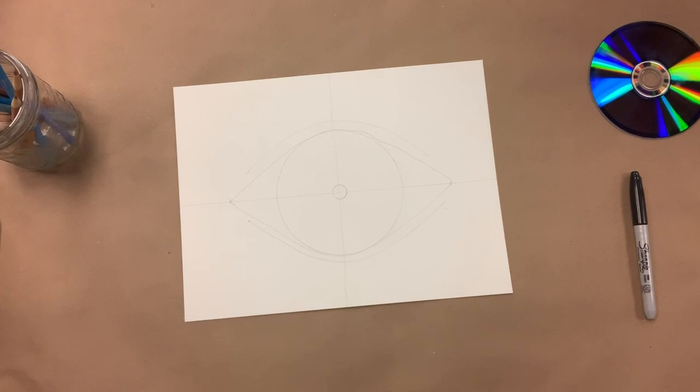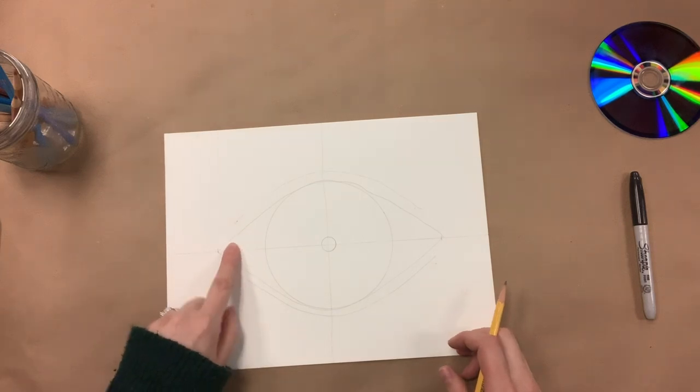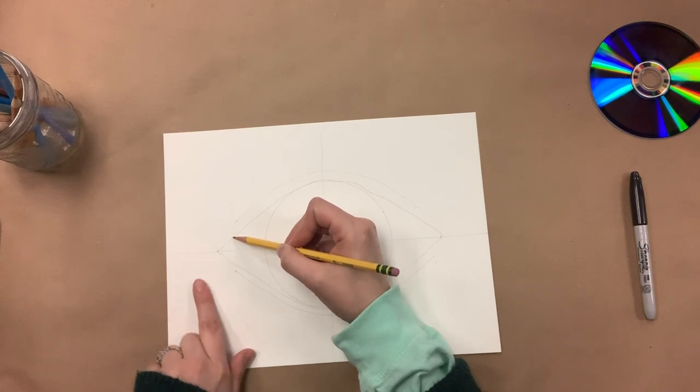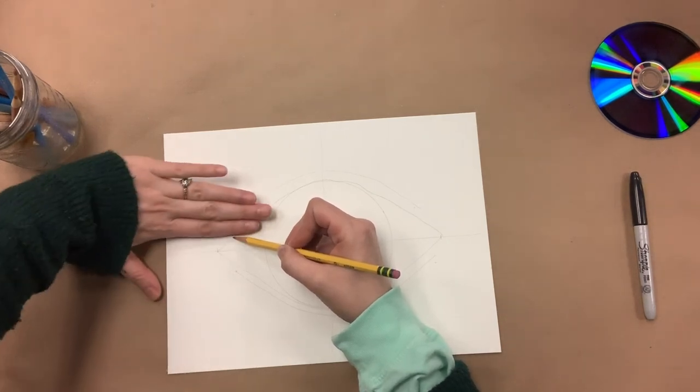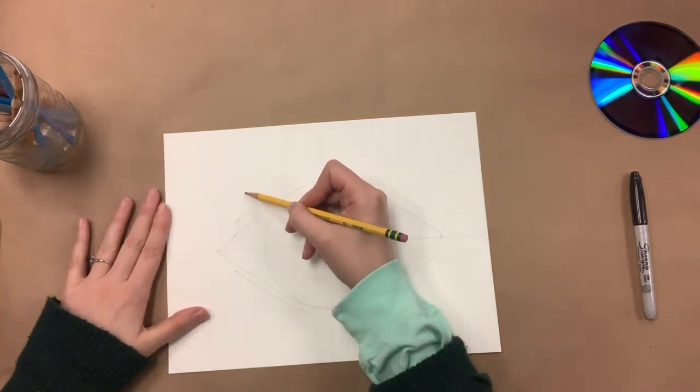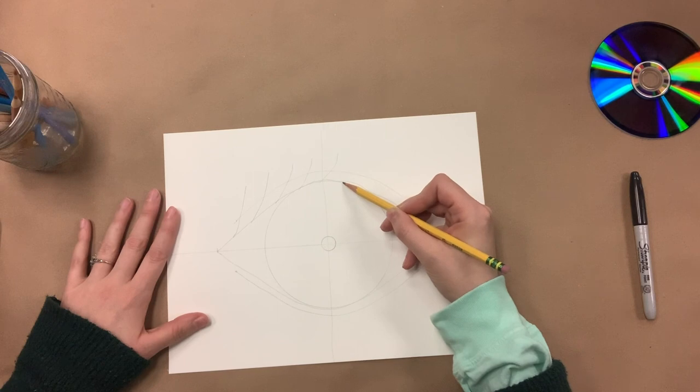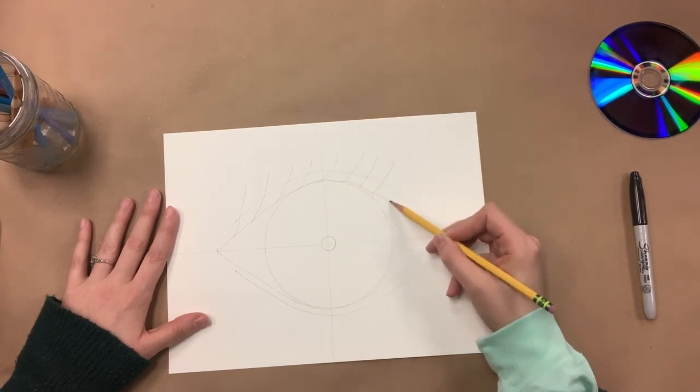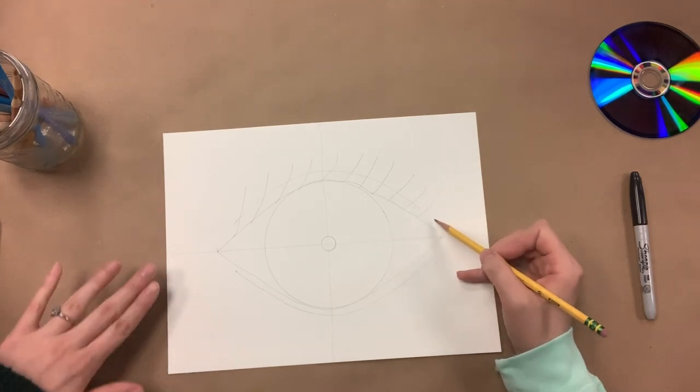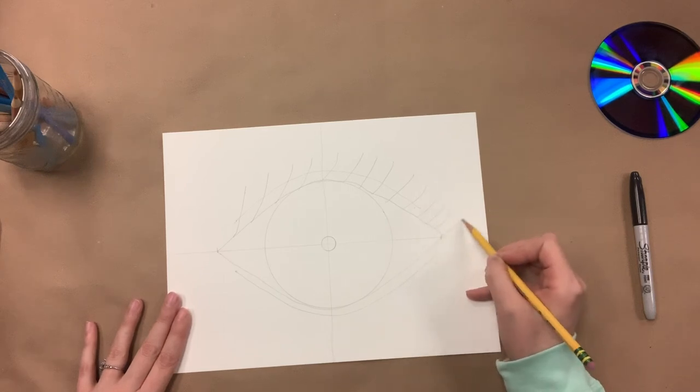The next thing we're going to do is we're going to make some eyelashes. What I would recommend is starting your eyelashes where the top of your eyelid starts. And you're just going to draw, if you think about maybe three more, three more finger width apart again. If it helps, you can look in the mirror and you can look at your own eyelashes. So you can see how far above your eyelid they go. And we're going to go all the way to the end of the right side of our drawing.